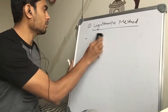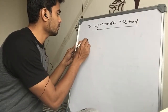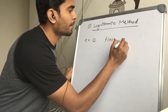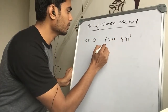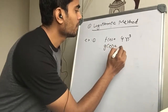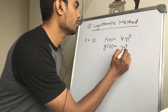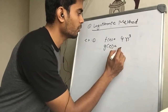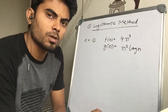Let's have an example to solve it with the help of this method. Say there are two functions: the first one is f(n) = 4n³, and the second function g(n) is n² log n. We need to find out which function has a higher growth rate, expressed in terms of log.